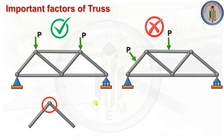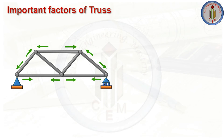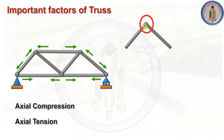Trusses primarily transmit axial force only. There will be no shear force or bending moment in trusses, unlike frames and beams. Trusses always transmit only axial force. The loads at truss joints can be vertical, horizontal, or inclined. All members in a truss can carry only axial compression or axial tension, since all joints are pinned and no bending moment can develop.